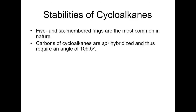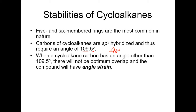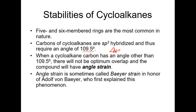Carbons on the cycloalkanes are sp3 hybridized and require a bond angle of 109.5 degrees. Not all rings achieve that — for example, cyclopropane. Based on geometry, these bond angles are 60 degrees. They want to be 109.5, so you're forcing these bonds to be about 50 degrees less than what they want to be. That's why those rings are not that stable. They do exist, but they're very high energy molecules. When a cycloalkane has an angle other than 109.5, there won't be optimum overlap, so it has angle strain.